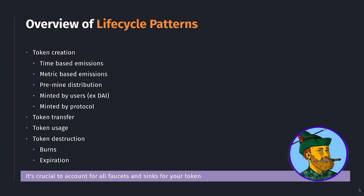For token creation, there are quite a number of ways tokens can be created. They could be emissions following a time-based schedule — Bitcoin was the first example of this, created every single block that is mined, roughly every 10 minutes on average. You could also have metric-based emissions: tokens emitted when the protocol hits a certain amount of revenue, TVL, or some usage-based metric — kind of performance-based emissions.